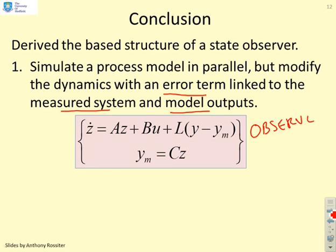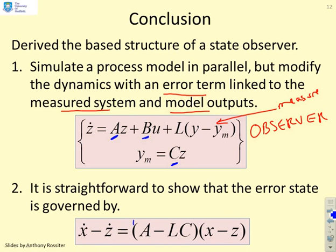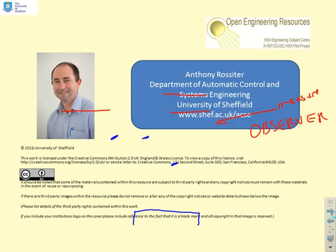Critically the observer uses both the measurement, which we've got, and it uses the knowledge that we have, which is the matrices A, B and C. It's straightforward to show that if you use this observer then the error state is governed by a dynamic like this. If you can make this transition matrix A minus LC have stable dynamics then the error state will converge to zero. That's what we're saying.